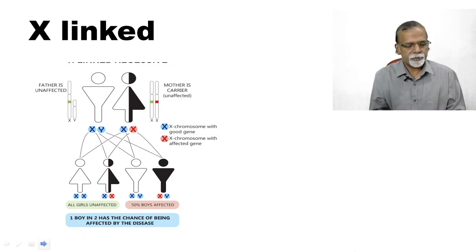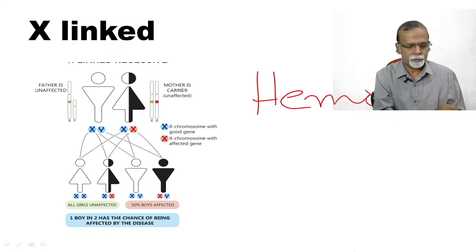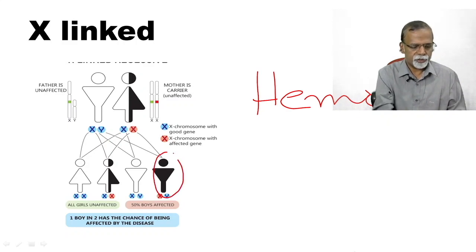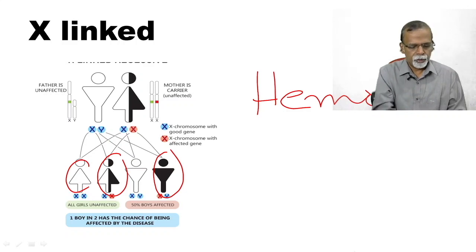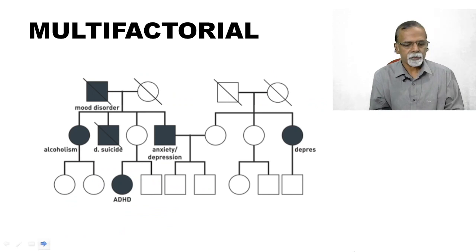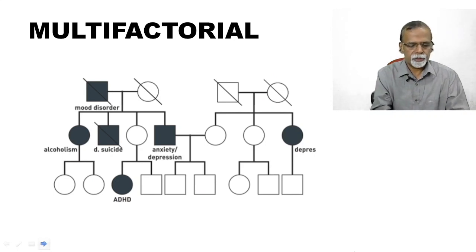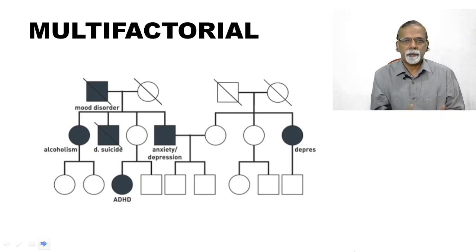There are some conditions which can be X-linked. Typical example is hemophilia. You can see that only boys are affected, females are carriers and they are not affected. There is fifty percent chance for the boys to develop the disease. Some of the diseases are multifactorial but there may be clustering in family. So again you can understand this by drawing the family tree. Certain disorders may occur in family, it may be multifactorial, there may be genetic basis also.